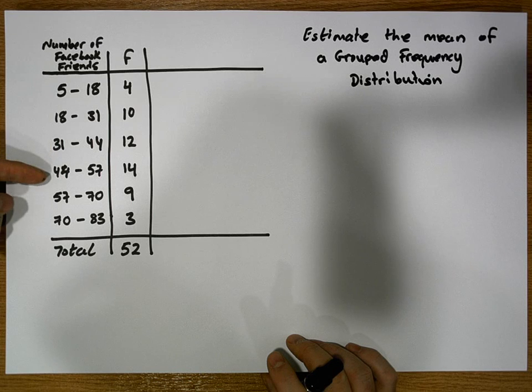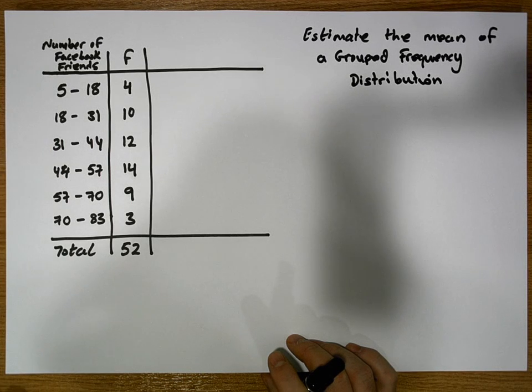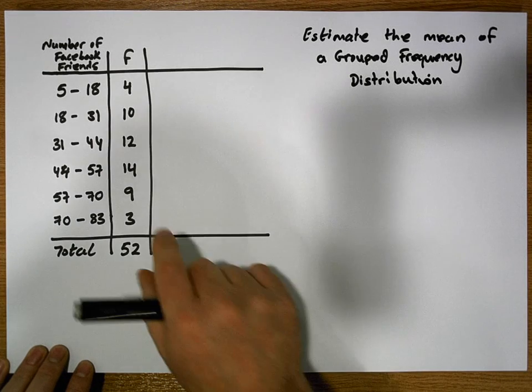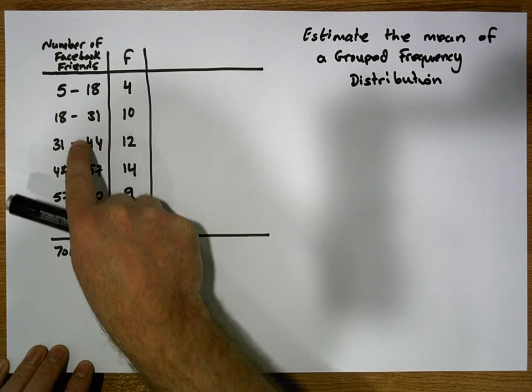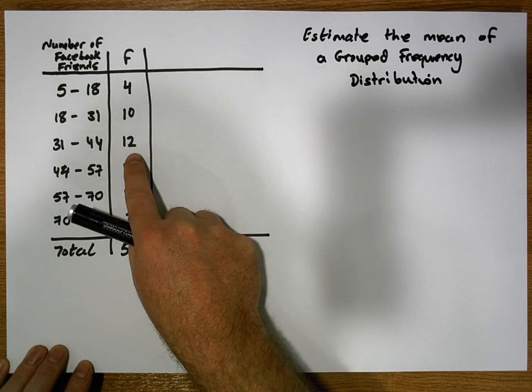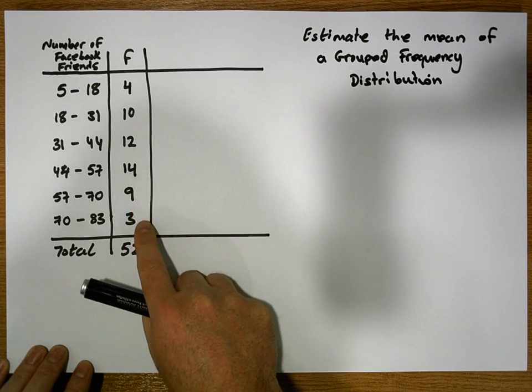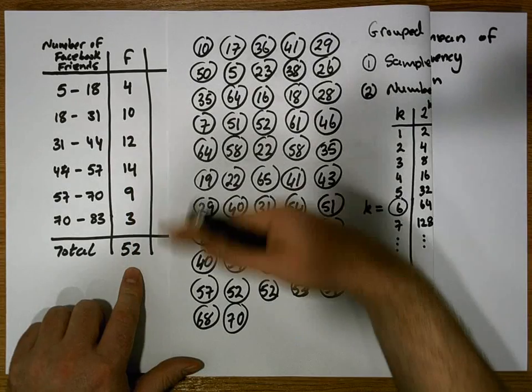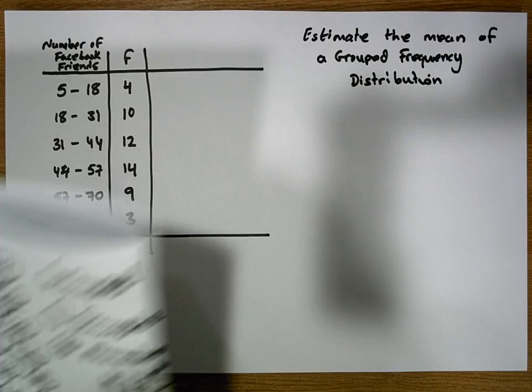From that previous video, we constructed this grouped frequency distribution where we had six classes with a class width of 13 in each case, and the number of observations in each interval was 4, 10, 12, 14, 9, and 3, giving us a total of 52 observations.